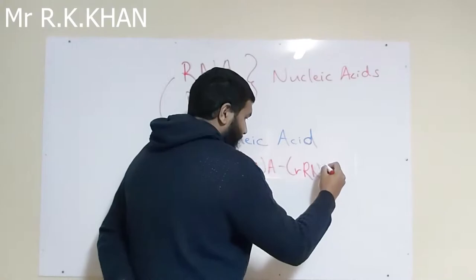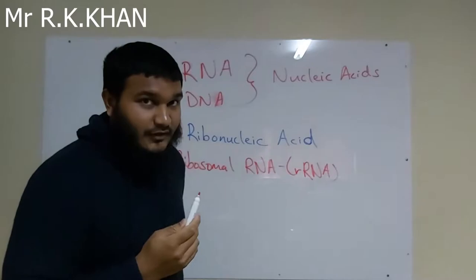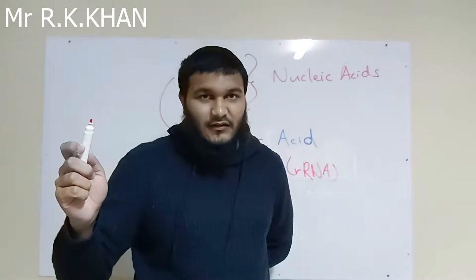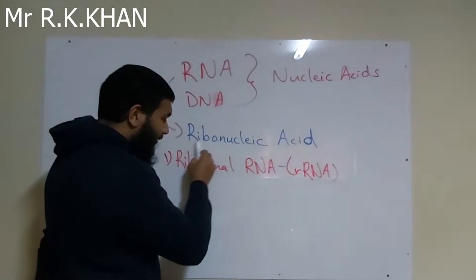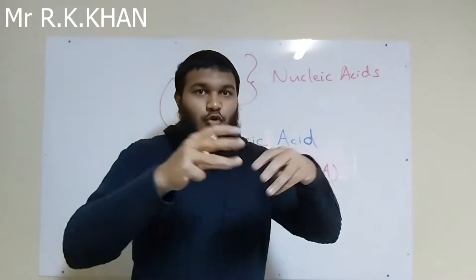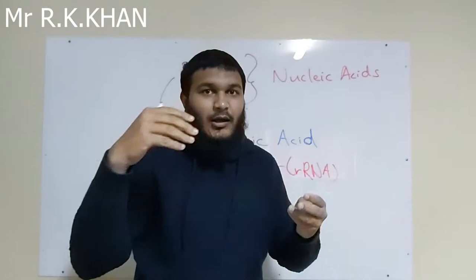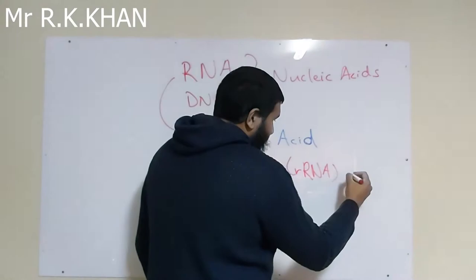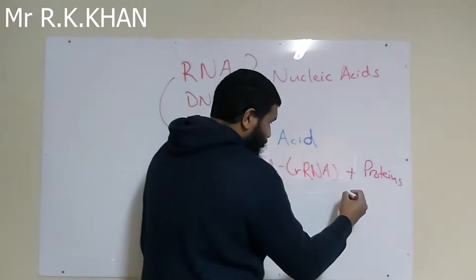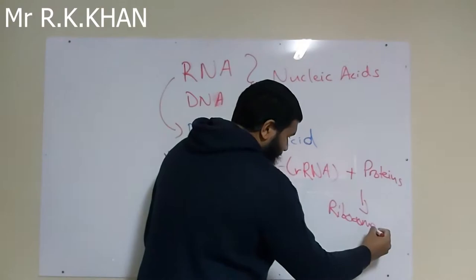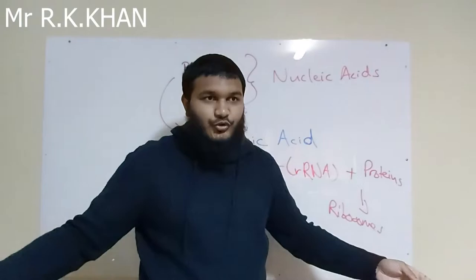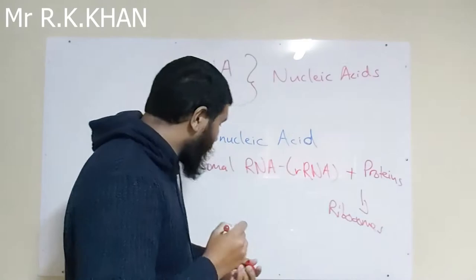The first type is ribosomal RNA, or rRNA. From Grade 10, we know that ribosomes are the site of protein synthesis — it is where proteins are made. Ribosomal RNA is a special type of RNA that combines with special proteins to form ribosomes, which are then the sites where other proteins are produced.